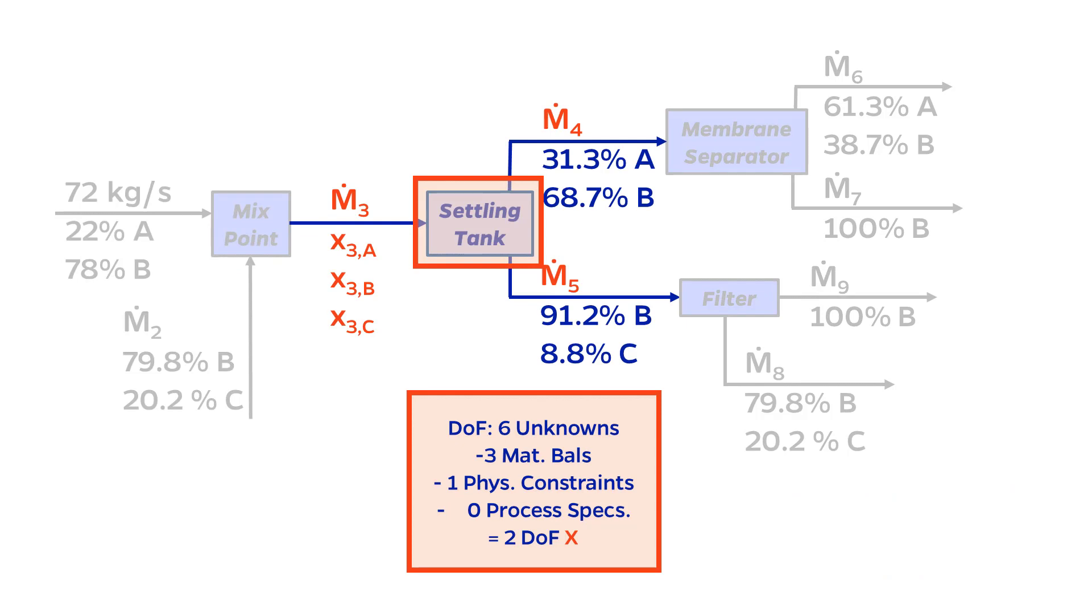Moving on to the settling tank, apply the same thinking of ignoring everything else. Here I have six unknowns, with only three material balances and a physical constraint.